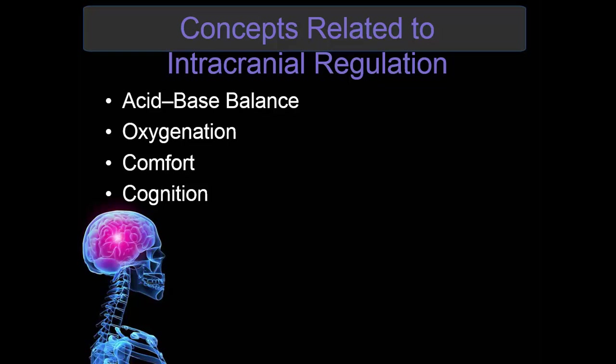Concepts related to intracranial regulation: acid-base balance — respiratory acidosis occurs with increased CO2, which leads to vasodilation and increased intracranial pressure. Oxygenation needs to be assessed; decreased level of consciousness can result in decreased respirations. Looking at comfort, this relates more to end-of-life care: increased intracranial pressure can lead to herniation, which can lead to brain death, and at that point you are basically just making them comfortable.